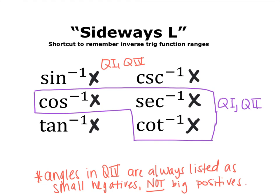Here's a shortcut for remembering which inverse trig function ranges lie in which quadrant. Think of a sideways L: cosine, secant, and cotangent inverses lie in quadrants one and two. Sine, cosecant, and tangent inverses lie in quadrants one and four. You can think of it as cosine-strong functions live in quadrants one and two, and sine-strong functions live in quadrants one and four. All angles in quadrant four are listed as small negatives, not their large positives.